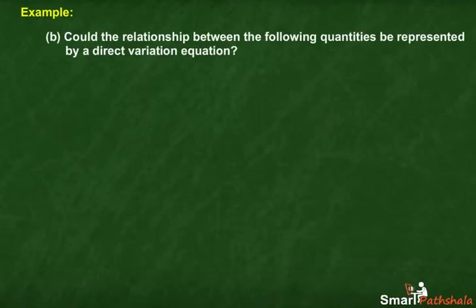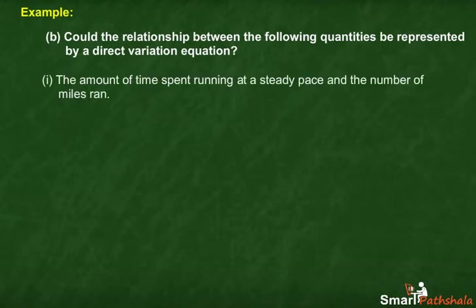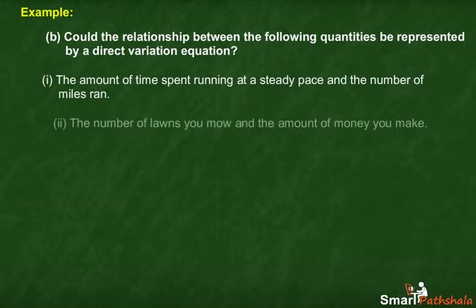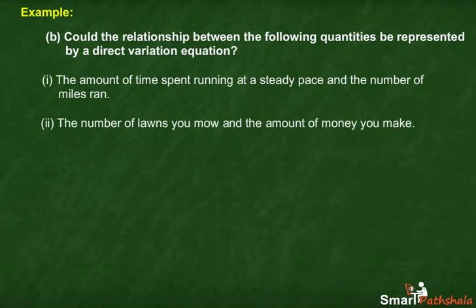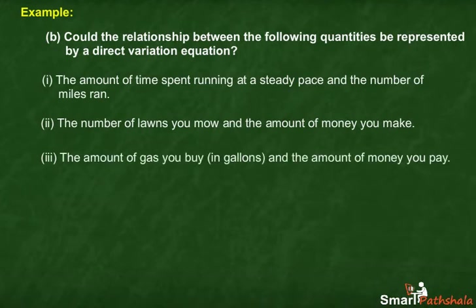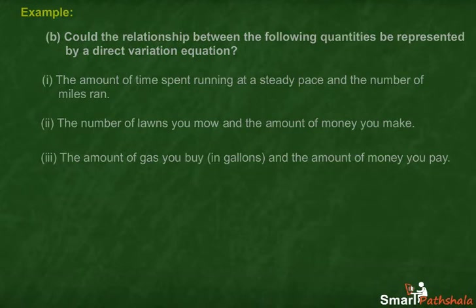Example B. Could the relationship between the following quantities be represented by a direct variation equation? 1. The amount of time spent running at a steady pace and the number of miles ran. 2. The number of lawns you mow and the amount of money you make. 3. The amount of gas you buy in gallons and the amount of money you pay.